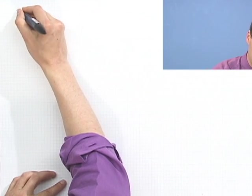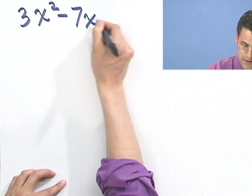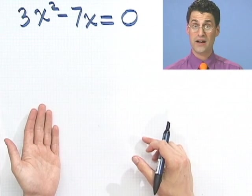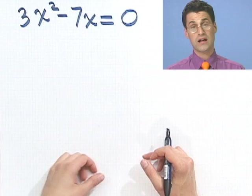Suppose I give you 3x squared minus 7x, and that equals 0. Well, now we're in great shape because they handed this to us on a silver platter, right? I already have the 0 there, now my job is to factor. What technique would I use here?